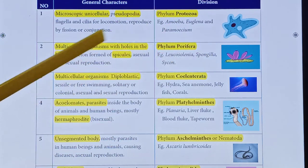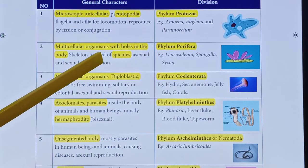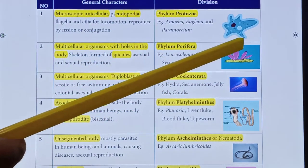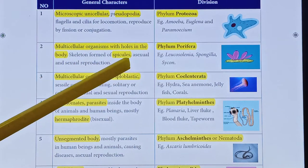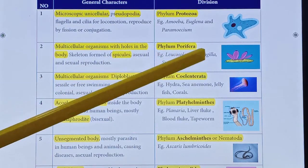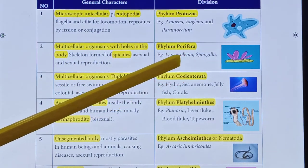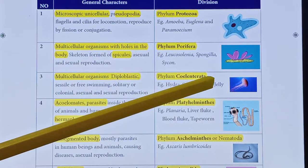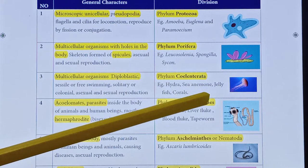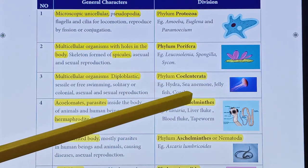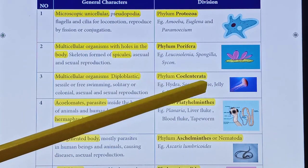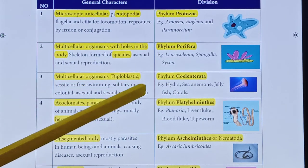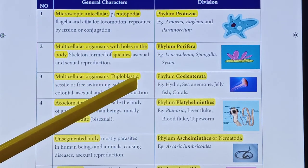Phylum Porifera includes multicellular organisms with holes in the body, a skeleton made of spicules. Examples are sponge and sycon. Phylum Coelenterata includes hydra, anemone, jellyfish, and corals. These are multicellular organisms with a diploblastic body made up of two layers.